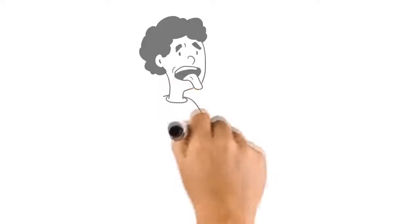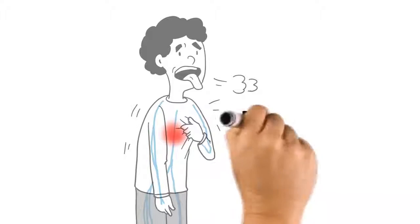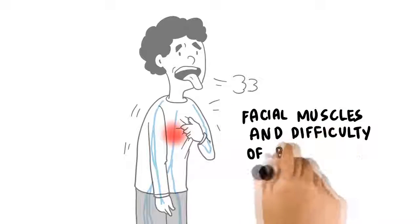As GBS progresses, numbness and weakness usually spreads up your body and in some serious cases that can affect your breathing and facial muscles as well.